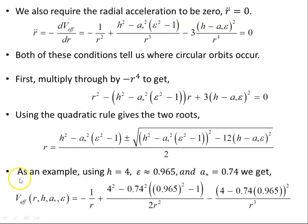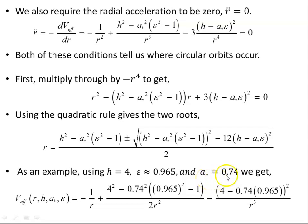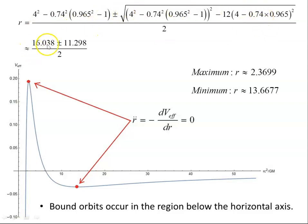As a specific example, we'll set the angular momentum H equals 4 units. In these units where everything is set to one, this angular momentum becomes the angular momentum of a particle per unit mass. Our energy parameter is 0.965 and our dimensionless spin parameter is 0.74. Putting that in, here's our effective potential. The two roots give a maximum at this smaller value and a minimum at the larger value. Setting constants to one makes the plotting and visualizing a lot easier.